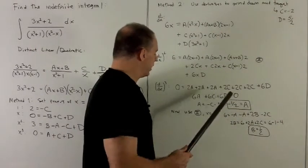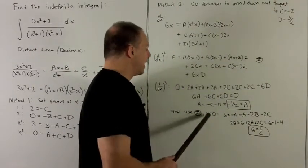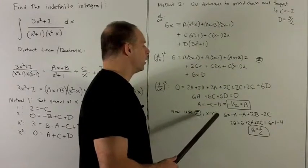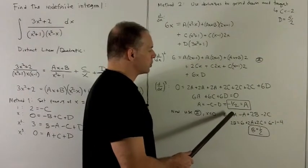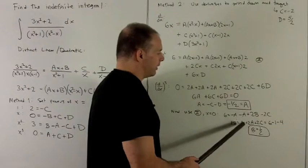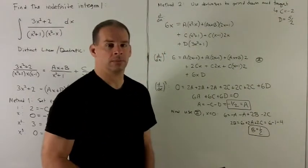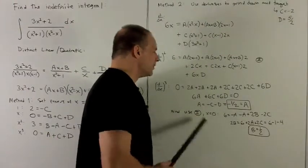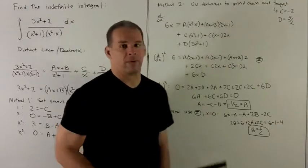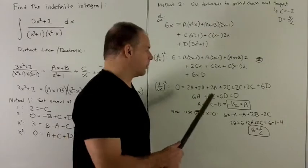That gives us a. For the second derivative equation, letting x = 0 (targeting a root) gives 6 = −2a + 2b − 2c, which yields b = 1/2. Note that for this example, Method 2 doesn't give us much more than Method 1 did, but depending on the problem it may be preferable.